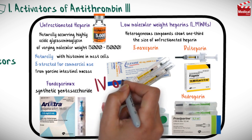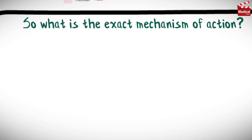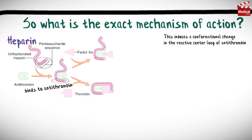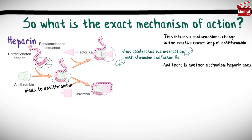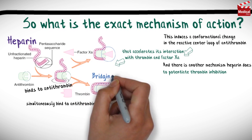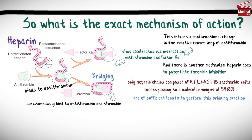These drugs are administered intravenously or subcutaneously. Heparin binds to antithrombin via its pentasaccharide sequence, which induces a conformational change in the reactive center loop of antithrombin, that accelerates its interaction with thrombin and factor XA. For another mechanism, heparin must simultaneously bind to antithrombin and thrombin — called bridging — but only heparin chains composed of at least 18 saccharide units, corresponding to a molecular weight of 5,400, are of sufficient length to perform this bridging function.